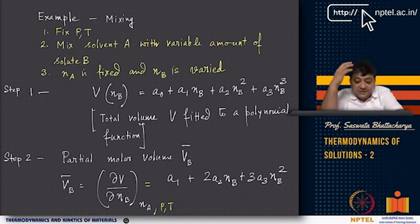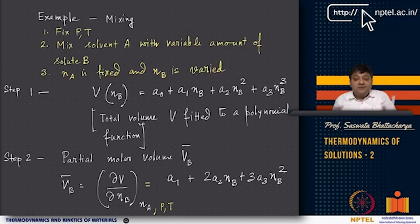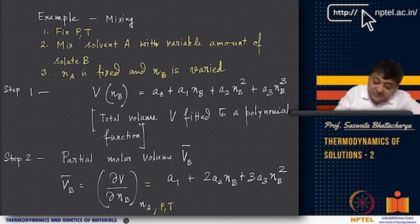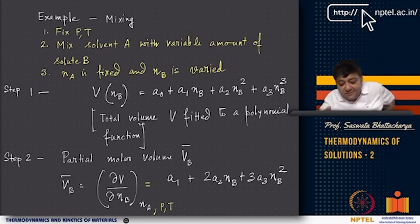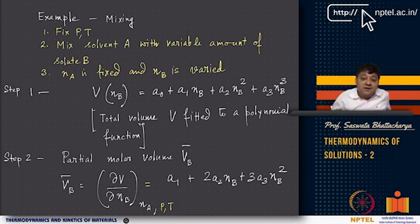Now think of the mixing process. When you mix solvent A with a variable amount of solute B at fixed pressure and temperature, with fixed moles NA and varying NB, you measure the volume as a function of NB. The total volume V(NB) can be fitted to a polynomial: V = A0 + A1·NB + A2·NB² + A3·NB³.